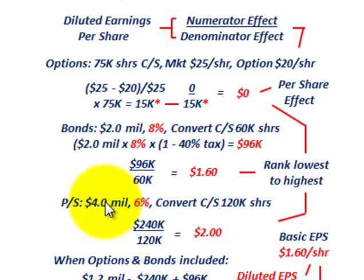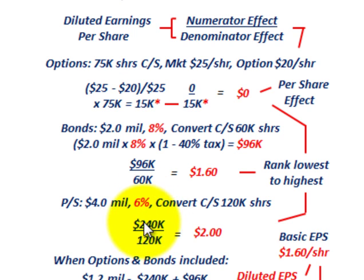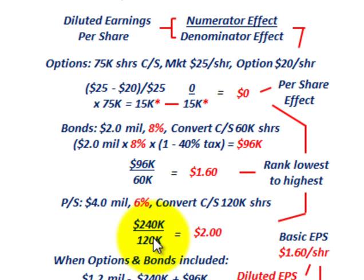For preferred stock: $4 million, 6% dividend rate, converting into 120,000 shares. The numerator effect is adding back the $240,000 dividend, since converting at the beginning of the year means no dividend is paid. The denominator effect is 120,000 additional shares. So $240,000 ÷ 120,000 = $2.00 per share effect for preferred stock.